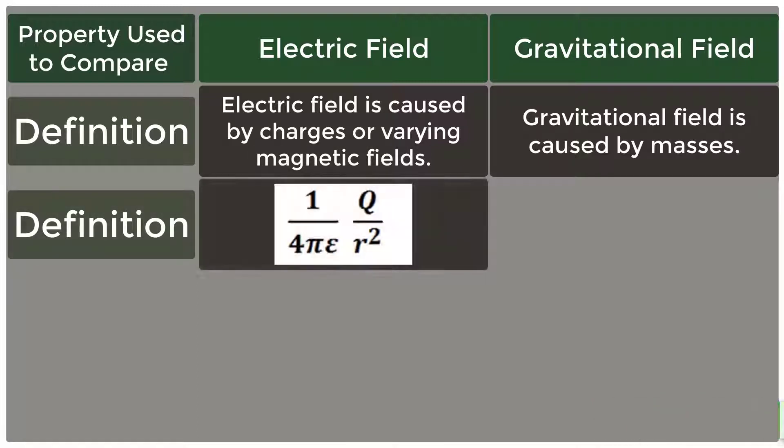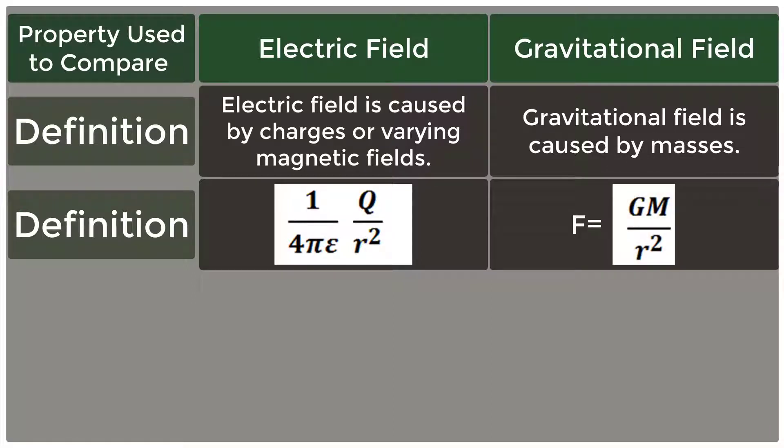The electric field equation is 1 over 4 pi epsilon times Q over R squared. For gravitational field, F equals GM over R squared.